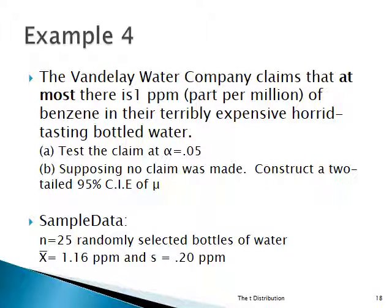Here's the next example. Part A says let's test the claim that, at most, we're going to find one part per million benzene in the water. We don't want benzene in our water, so it's a good thing if it's been limited. Part B says, supposing there was no claim, what do I do with the sample evidence — can I estimate mu? The sample data: 25 randomly collected bottles of water, an x-bar value of 1.16 parts per million, and a standard deviation of 0.2 ppm.